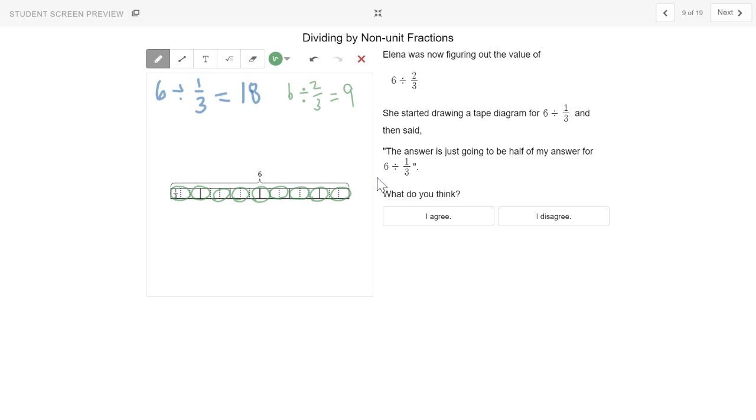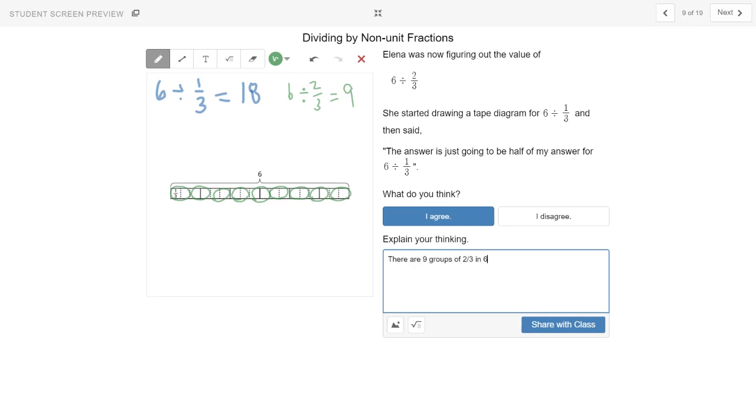So I agree. Also two-thirds multiplied by nine is six. You can think about it either way.